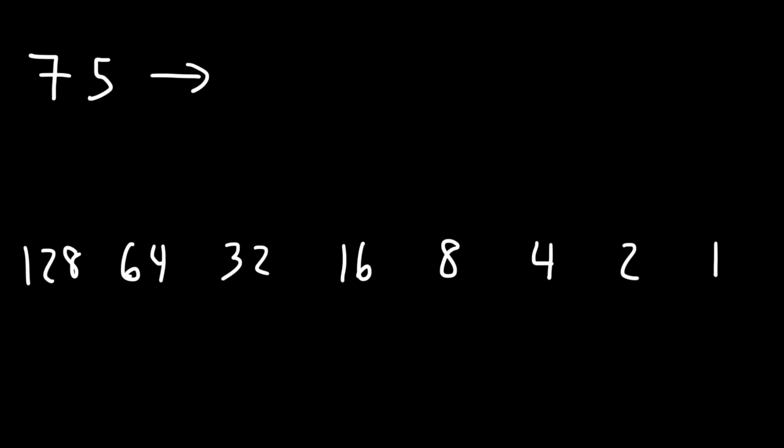So the highest base 2 number that is less than 75 is 64. We're going to start with 64. In this video, I'm going to show you two ways to convert a decimal number into a binary number. The first half of the video will focus on the subtraction method, and the second half will focus on successive division. I'll show you both ways, and then you can pick and choose which method you prefer.